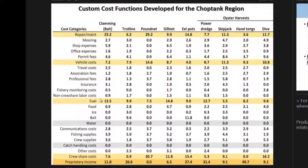So what we did — and we didn't plan on doing this at the beginning — is talk to a bunch of fishers in the Choptank River system and sought to understand how they allocate their expenditures across different cost categories. There are about 25 or so cost categories, and we looked across nine different fisheries.